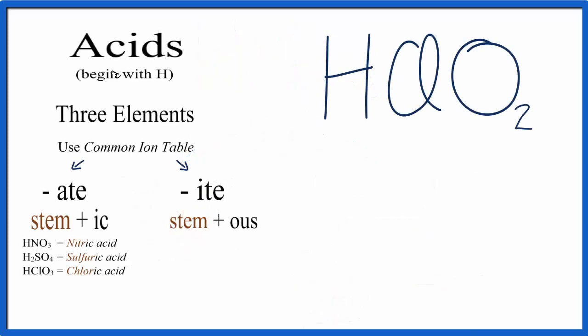We have our H, that's telling us that this is an acid, and then we have the ClO2, this polyatomic ion. And it's going to have a minus charge because H has a plus one charge. So we have ClO2 minus,